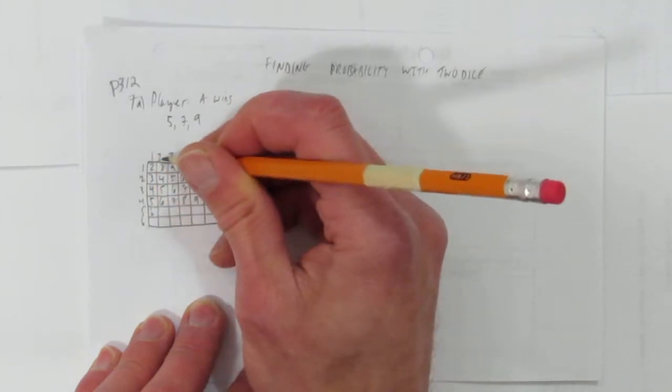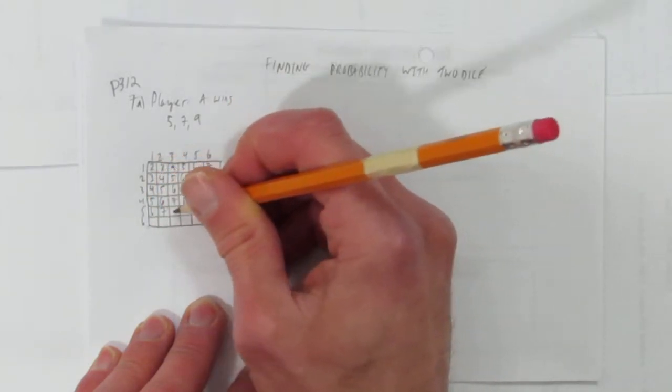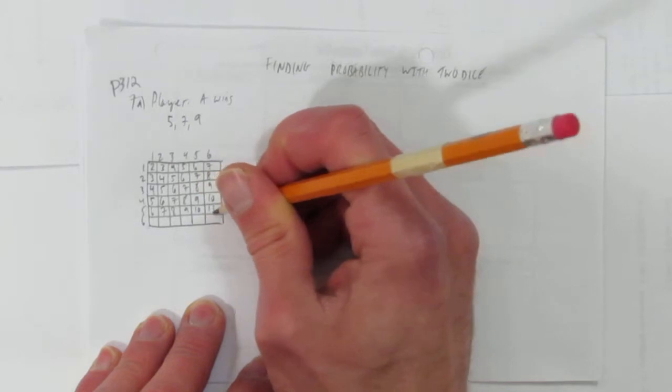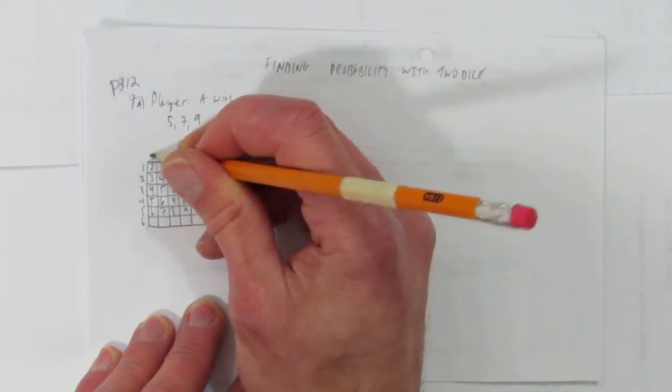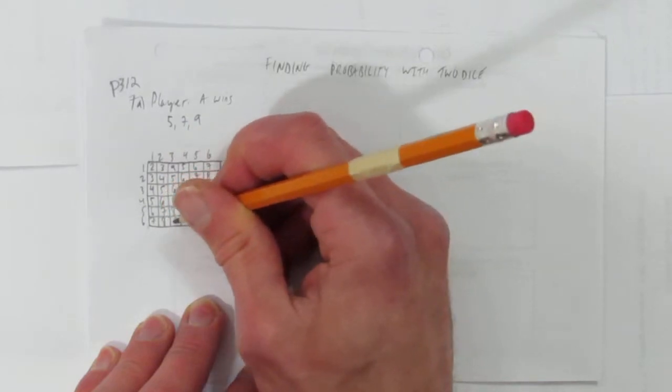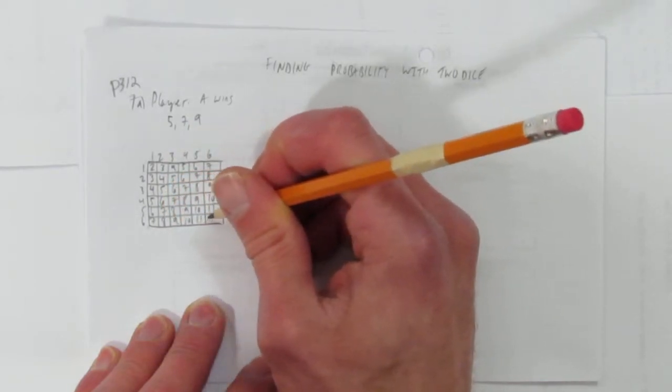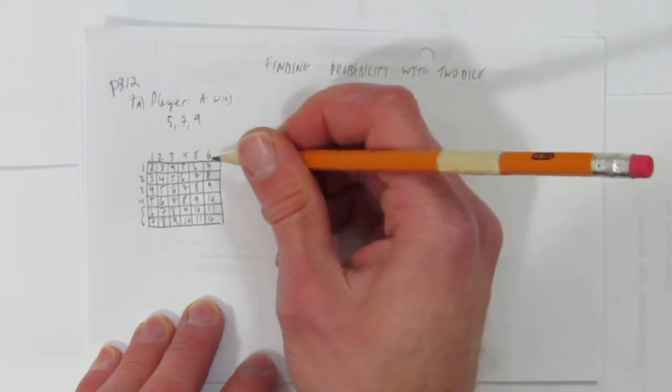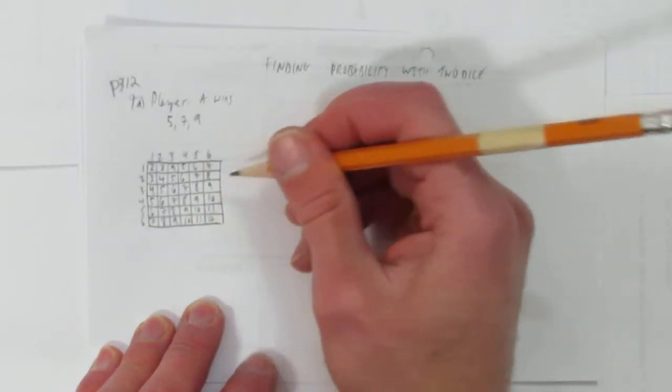1 and a 5 is a 6. 2 and a 5 is a 7. It's 6, 7, 8, 9, 10, and 11. And then 1 and a 6 is 7. 2 and a 6 is 8. And you have the same pattern. So here's all the possibilities with 2 dice, the possible sums.